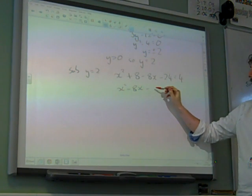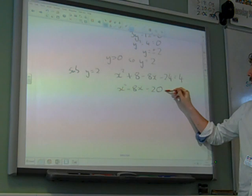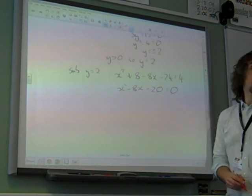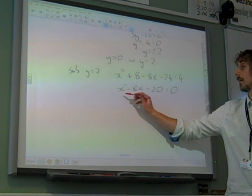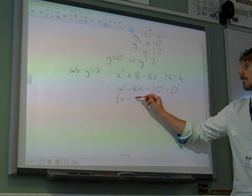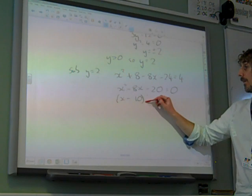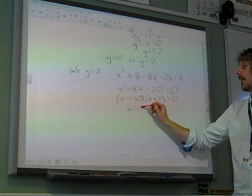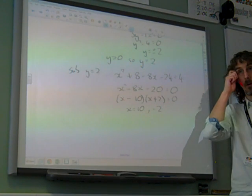Have I done that right? No, minus 20. Is that, have I got that right now? Yeah. Which factorises really nicely. x minus 10, x plus 2. So x equals 10, or minus 2 are our solutions.